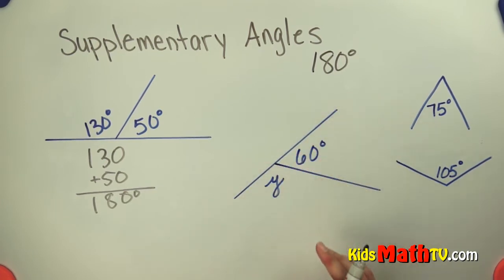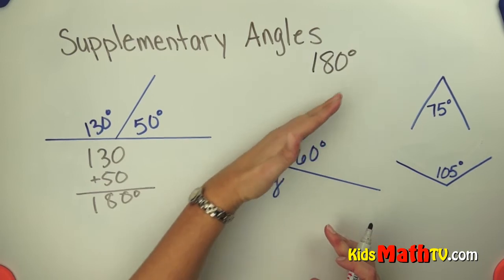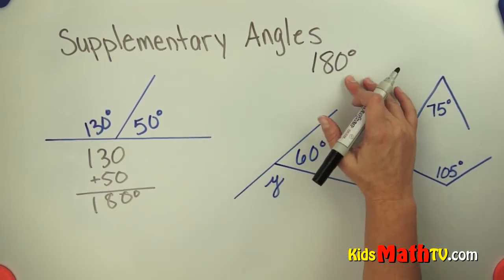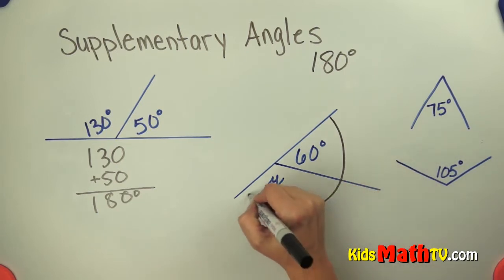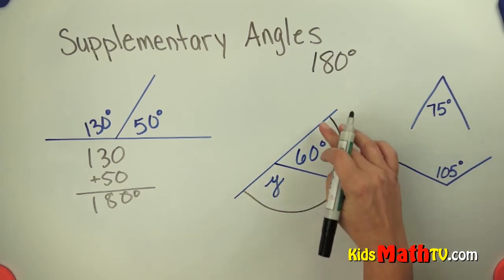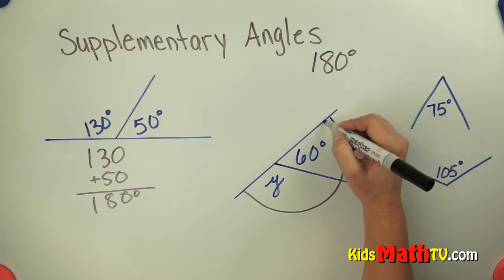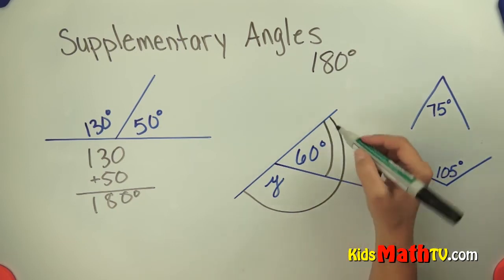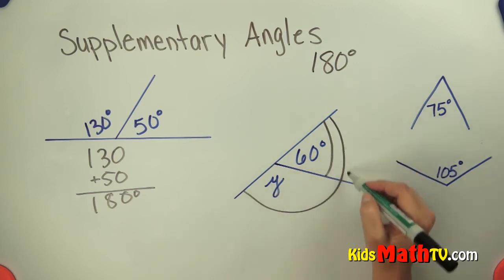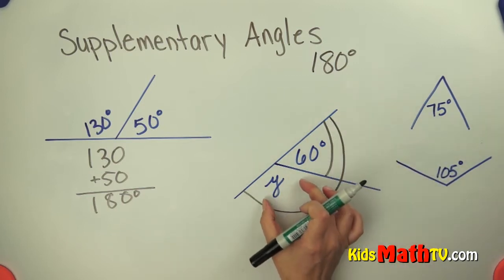So we can use that information. This is a straight line. A straight line is 180 degrees. So from here all the way across all the way around over to there is 180 degrees. This partial angle, this angle here, is 60 degrees. So we know this is 60 and we know this is 180 so we want to find what's left.